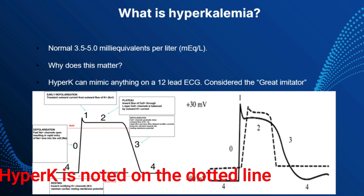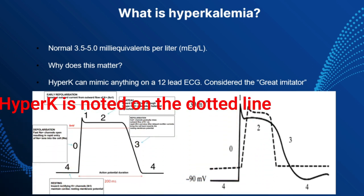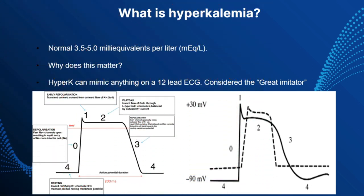Hyperkalemia also decreases the resting membrane potential, which prolongs depolarization and causes the myocyte to become more refractory and less likely to fully repolarize. Enough boring medical mumbo jumbo — now let's get into what actually causes hyperkalemia.